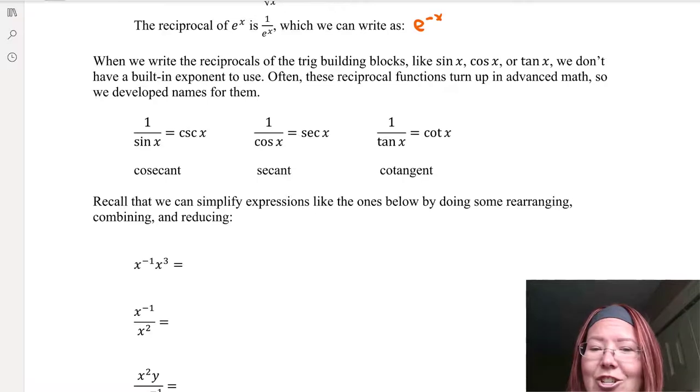1 over tangent of x is equal to a function we use COT of x. That stands for cotangent of x. So 1 over tangent x equals cotangent x.